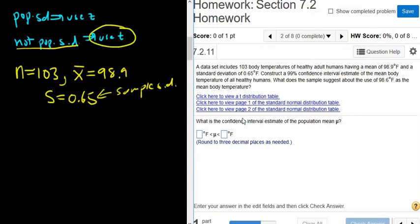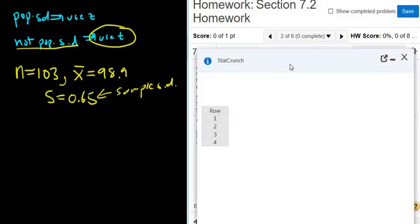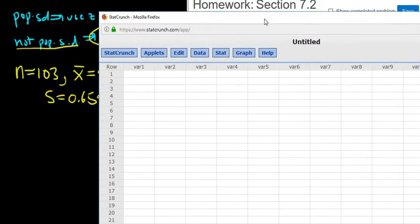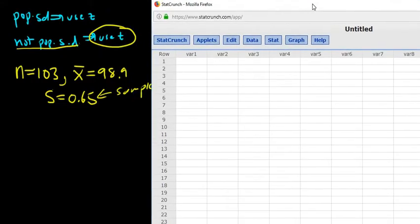Now here they give you a table and some other stuff. You can just ignore all of this. We're going to use StatCrunch to do this question. You go to where it says question help and click on StatCrunch. I'm going to click this to make it bigger. So we're using t because they're not giving us the population standard deviation.